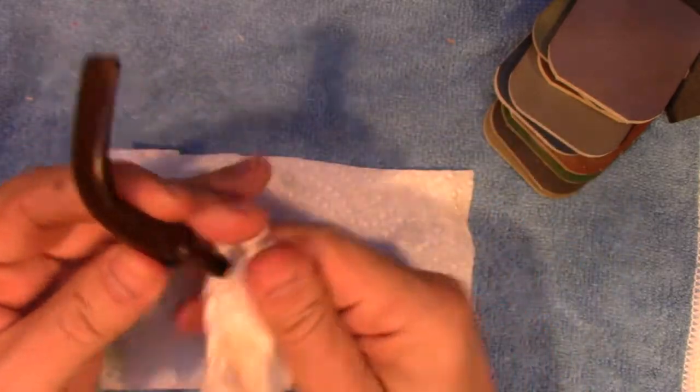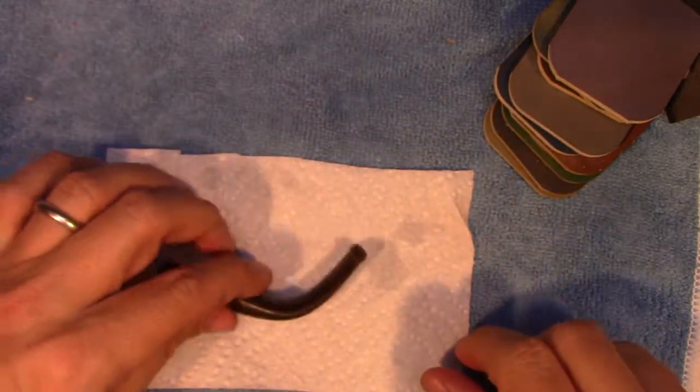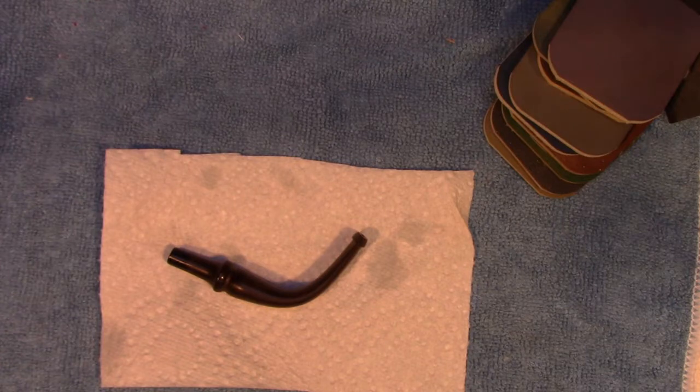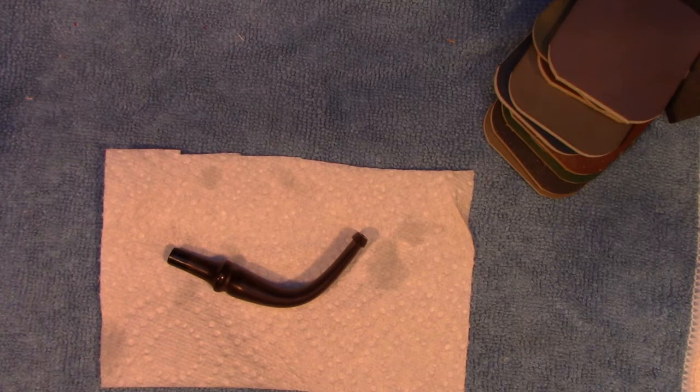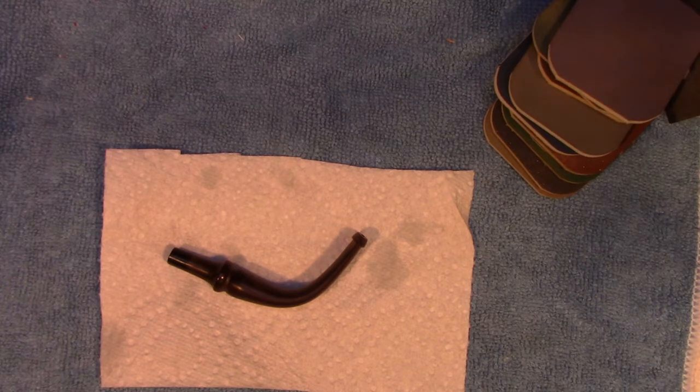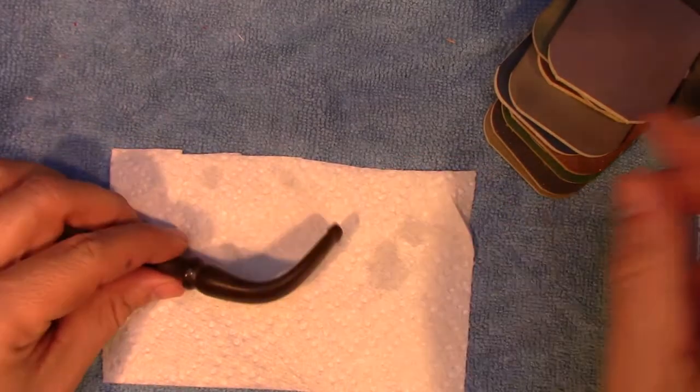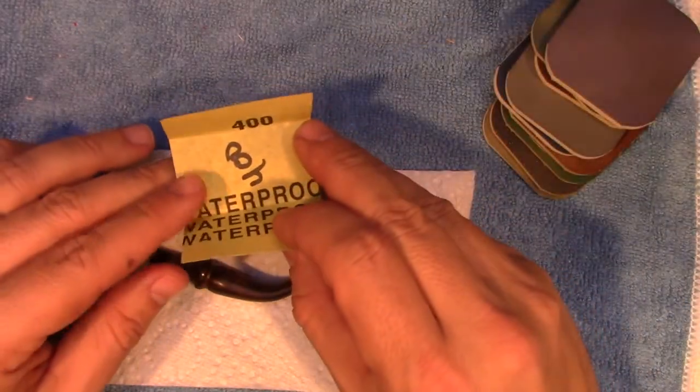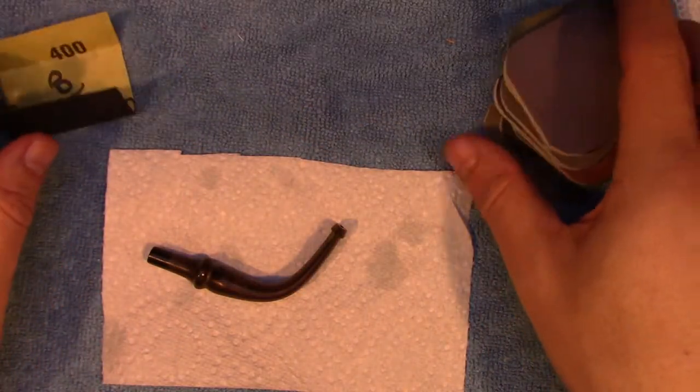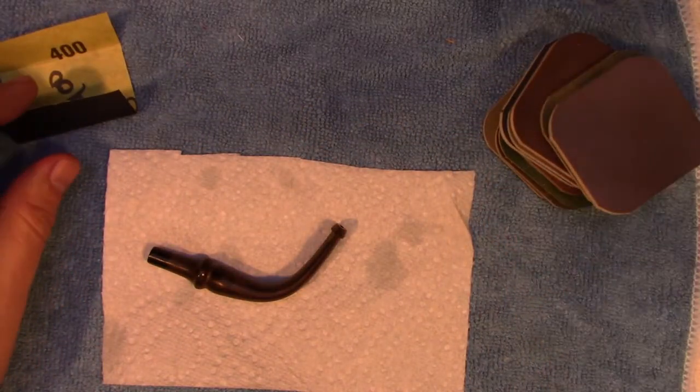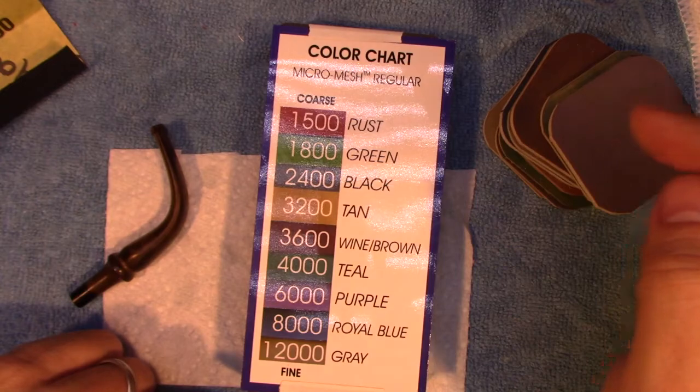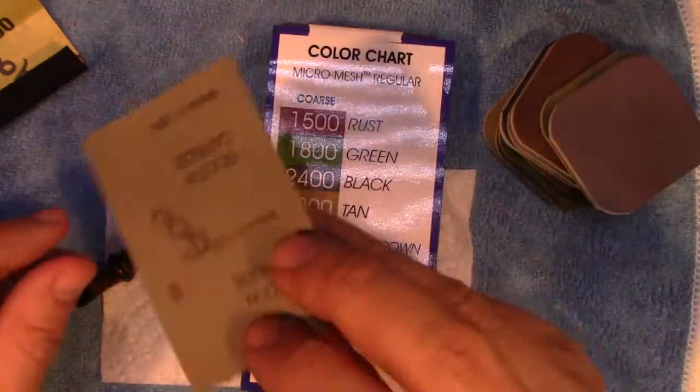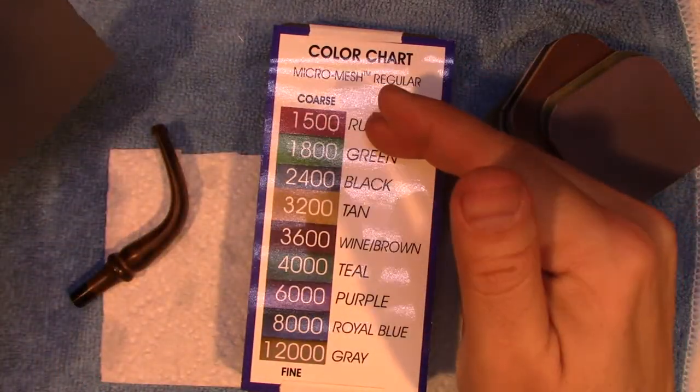You can see this is still discolored, but what we've done is we've produced a consistent level of oxidation across this whole thing. Now we will go ahead and go through the sanding steps, which are similar to what you've already seen. Starting in this case, because of the condition of this, I'm going to start with 400 grit sandpaper.